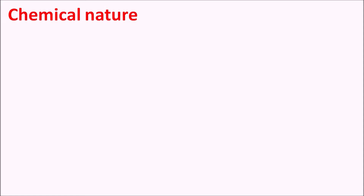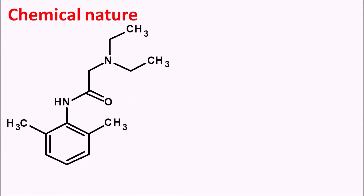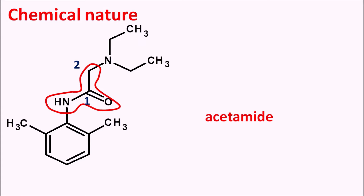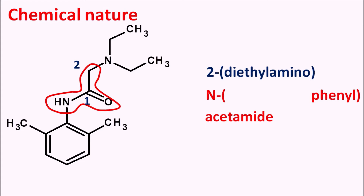Now let us look at the chemical nature of this drug. This is the structure of lidocaine and here we can observe an amide linkage. The amide is attached with a two-carbon chain — carbon one and carbon two — which is nothing but acetamide. So lidocaine is an acetamide derivative. On the second position it has a disubstituted amine, which is 2-(diethylamino), and on the nitrogen of the amide a phenyl ring is attached — N-phenyl — and this phenyl has methyl groups at both ortho positions. So the complete name is 2,6-dimethyl.